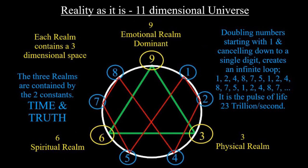indicating the two dimensions of time and truth. The three and six are the physical and spiritual realms, and the nine, as I've said, the dominant emotional realm.